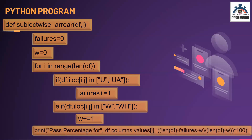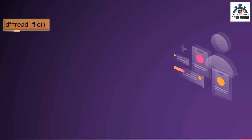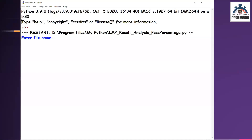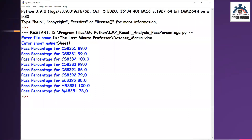Now I am printing the pass percentage using the formula we saw in the previous slide. For printing the subject code, I am using df.columns.values of J. Then, the formula follows. This is a function, so I need to call it. Let me first read the file — read_file has been already defined as we saw in the Part 1 video. I am looping through each subject for J in range(2, 11), since the index 2 to 10 in the Excel sheet contains the grades. I am calling the function subject_wise_RER of df and J. If we run the code and give the name of the Excel file, I will be getting the output: pass percentage for each subject code followed by the pass percentage.